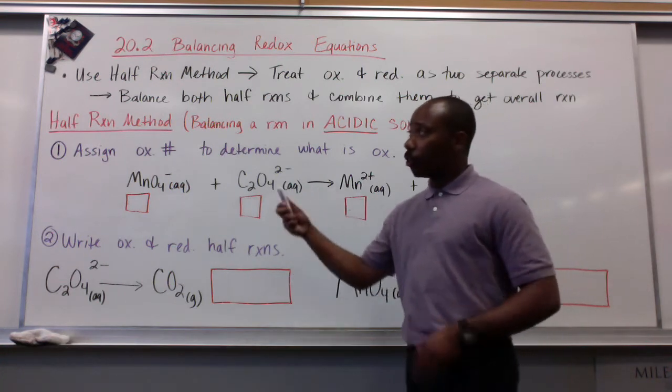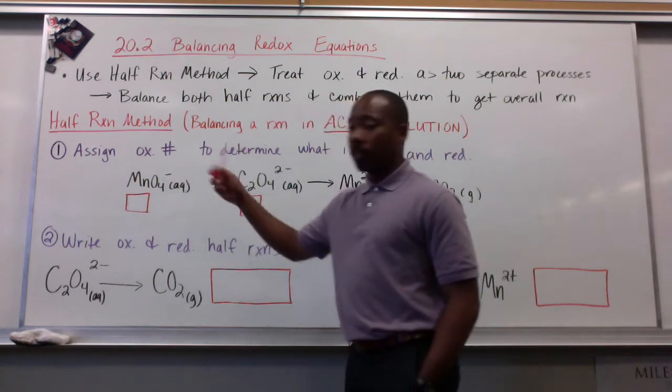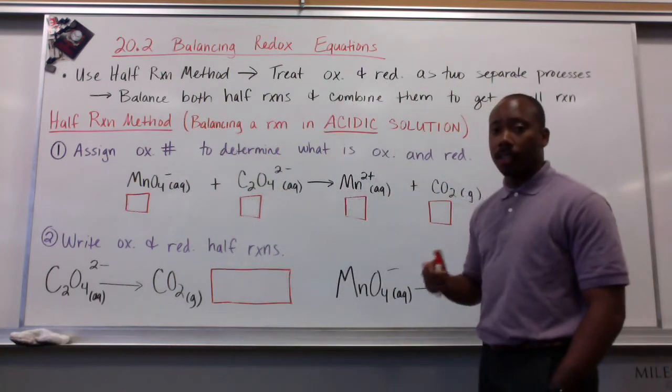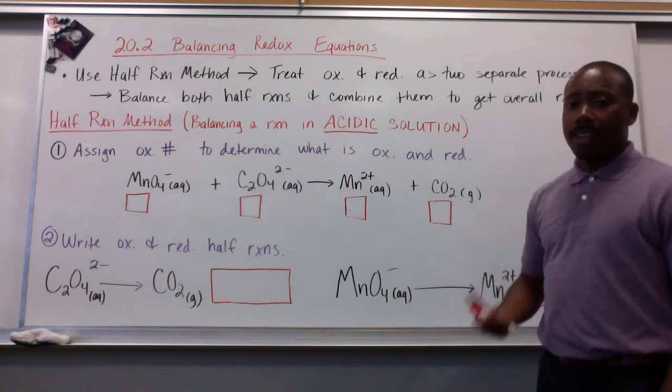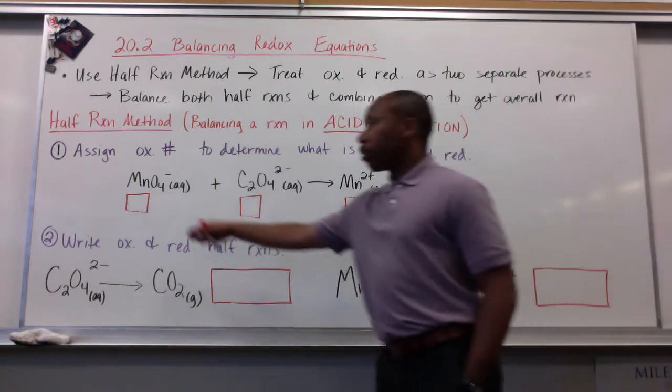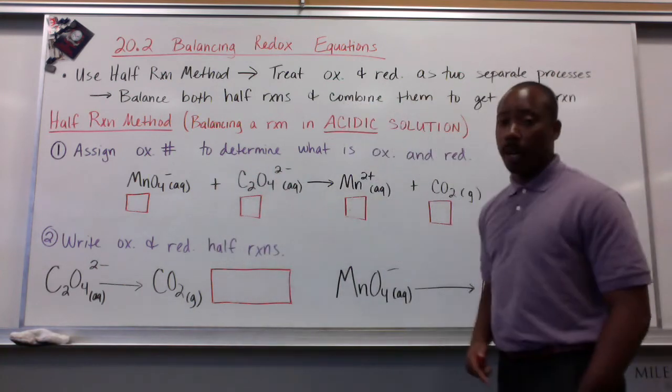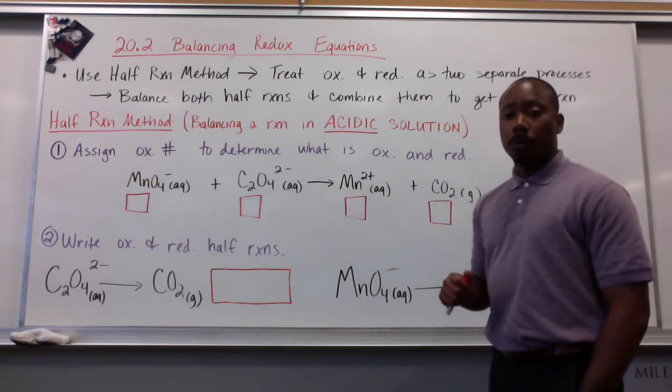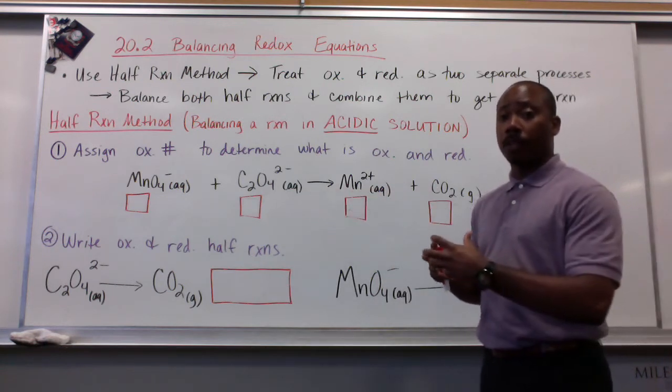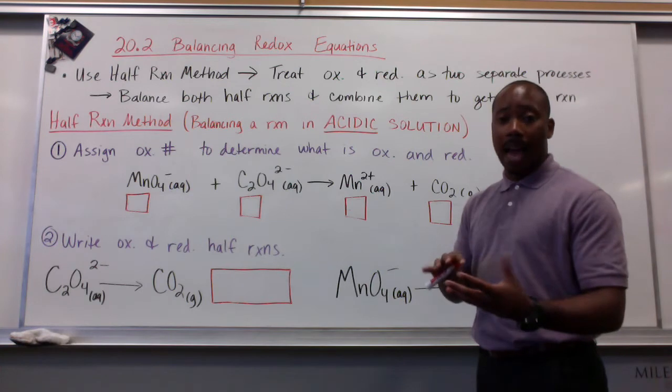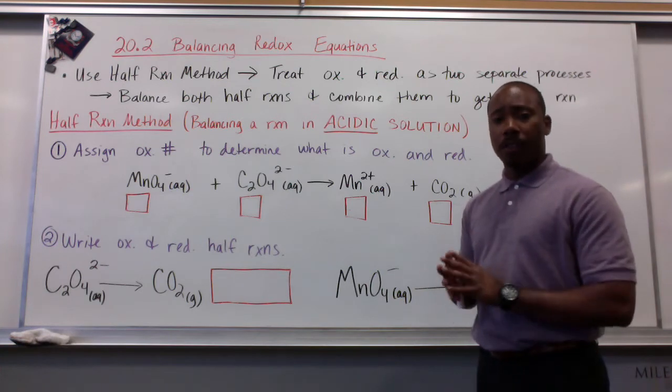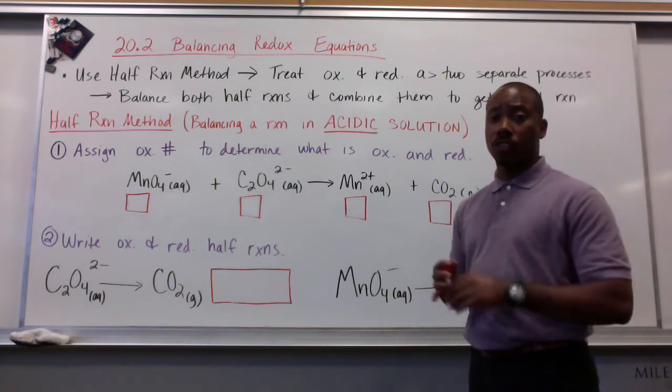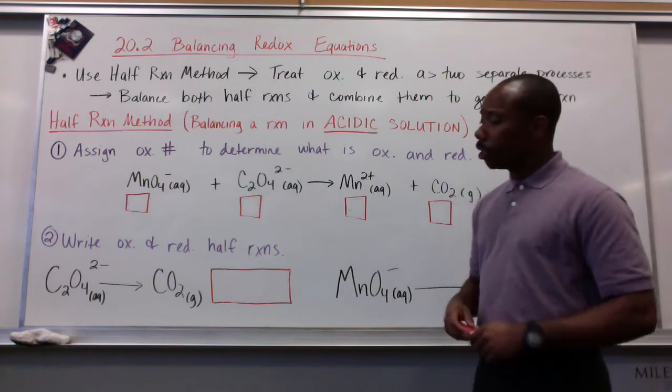The first thing to do in your half-reaction method is to assign oxidation numbers to determine what is oxidized and what is reduced. A little hint here: oxygen appears many times throughout this equation, so we're going to use oxygen to figure out the oxidation states of the atoms attached to oxygen, but we're not really going to concern ourselves about how oxygen is changing itself.